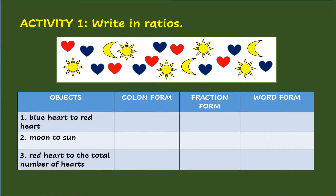Activity 1. Look at the objects inside the box and write the listed objects in the table below as ratios in colon, fraction, and word forms. Number 1: Blue heart to red heart. Since there are 7 blue hearts and 5 red hearts, the ratio in colon form is 7 is to 5. In fraction, it is 7/5.